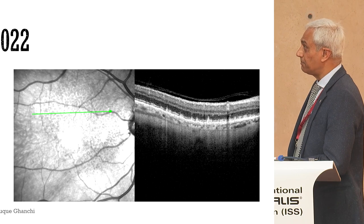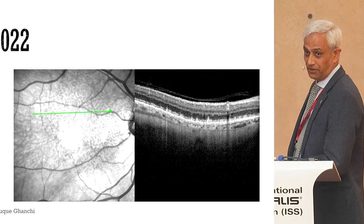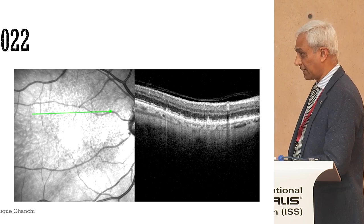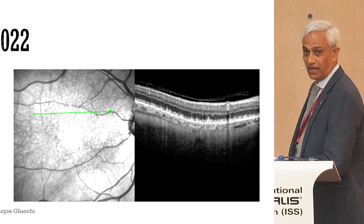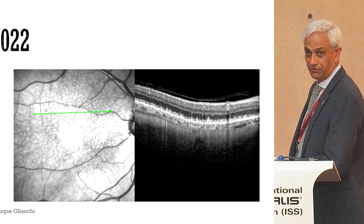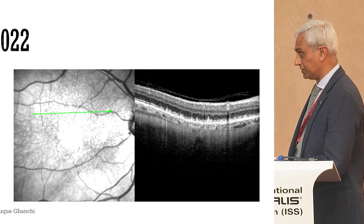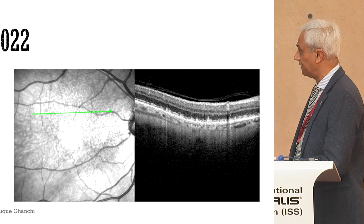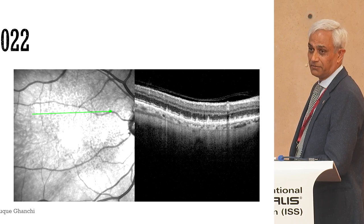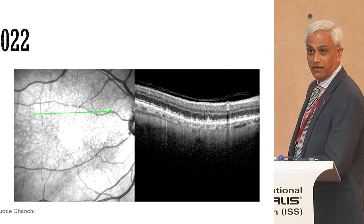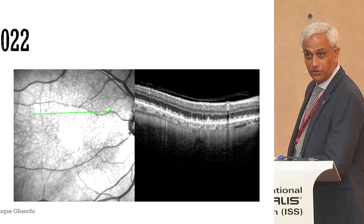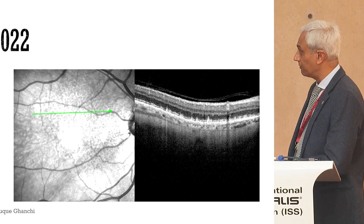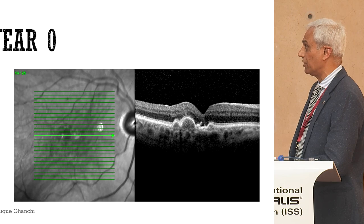In the same patient, if you look superior to the fovea, you're starting to see reticular pseudodrusen — multiple reticular pseudodrusen — have taken place. So there may be signs, some biological markers in there that we can learn to define and build upon.